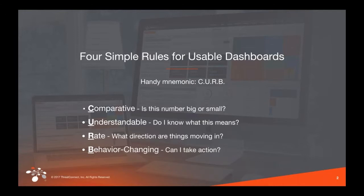Behavior-changing dashboards run in line with rate — they surface things like why we're seeing changes, such as becoming a new target. We want to build dashboards that help us notice those things faster. This gives us that information front and foremost.